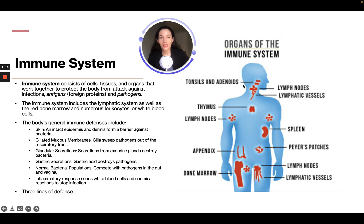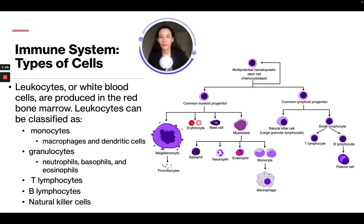Types of cells you'll find in the immune system are leukocytes or white blood cells. They are produced in the red bone marrow and leukocytes can be classified as monocytes, which are macrophages and dendritic cells; granulocytes, which are neutrophils, basophils, and eosinophils; T lymphocytes; B lymphocytes; and natural killer cells.